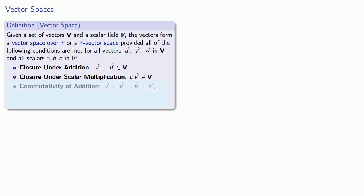Third, we have to have commutativity of vector addition. v plus u has to be the same thing as u plus v. Next, vector addition must be associative. If I add three vectors, it shouldn't make a difference whether I add the last two first or if I add the first two first. I should get the same result.